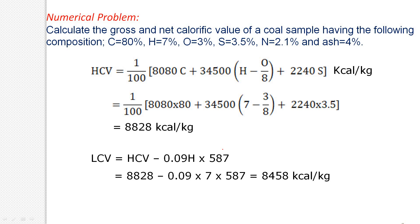If any constituent is not mentioned in the question, that constituent is assumed to be absent, and we substitute zero for it. Now, applying Dulong's formula: HCV = (1/100) × [8,080C + 34,500(H − O/8) + 2,240S] kcal/kg. Substituting: C = 80, H = 7, O = 3, S = 3.5, we calculate and obtain HCV = 8,828 kilocalories per kg.